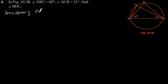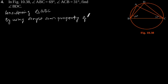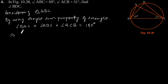Considering triangle ABC, by using angle sum property of a triangle, we can say that Angle BAC plus Angle ABC plus Angle ACB is equal to 180 degrees.